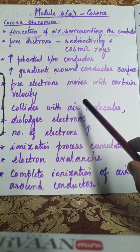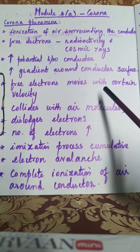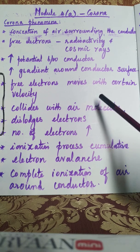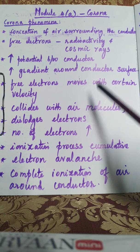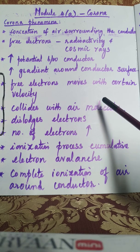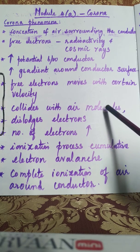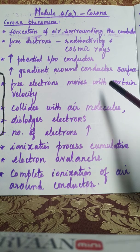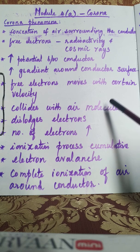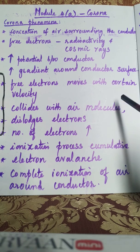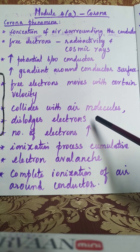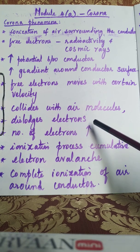In the atmosphere, the free electrons will be moving with a certain velocity. This small velocity with which the electrons move will not be sufficient to collide with other air molecules. But when you increase the voltage of the current-carrying conductor, the velocity with which the free electrons move also increases, and this increased velocity is sufficient to collide with other air molecules, which in turn dislodges electrons from those air molecules.